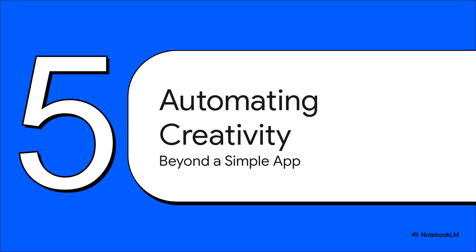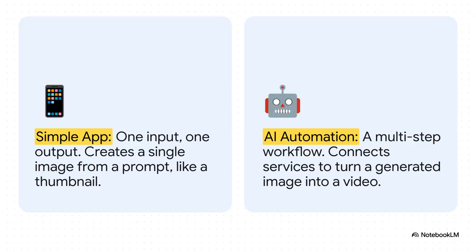For people who wanted to take it a step further, this free access unlocked something way more powerful: automating entire creative workflows. Think of a simple app as a one-shot deal — you give it a prompt, it gives you back one thing, like an image. An AI automation, though, is like a whole assembly line. You could have Gemini create an image and then automatically send that image over to another service, like Runway, to turn it into a video — all of it happening without you having to click a single thing. It's about stringing these powerful AI tools together to do complex, creative work for you.